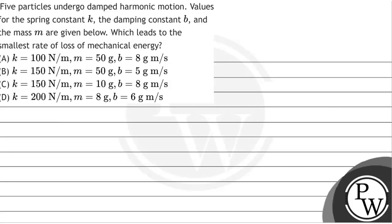Hello, let's see this question. Five particles undergo damped harmonic motion. Values for the spring constant k, the damping constant b, and the mass m are given below. Which leads to the smallest rate of loss of mechanical energy?